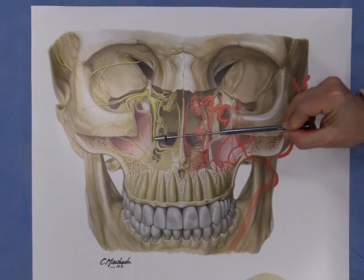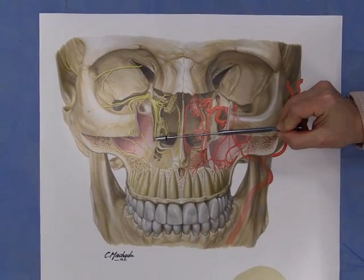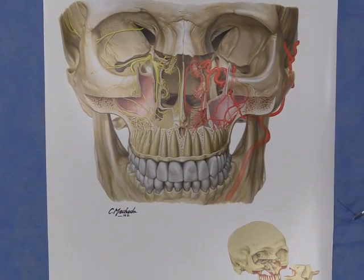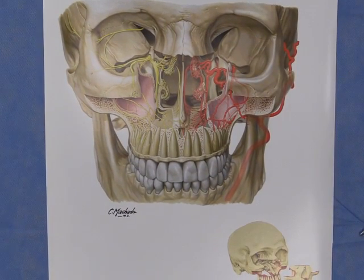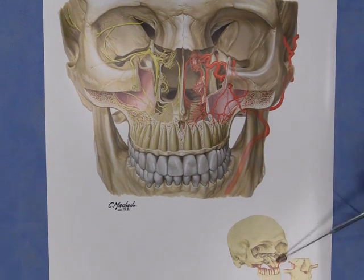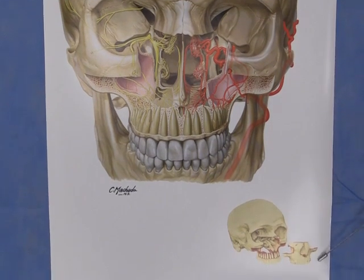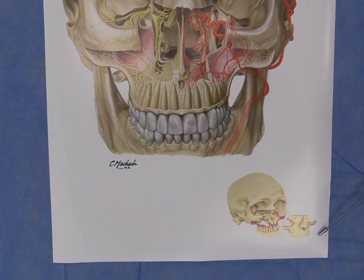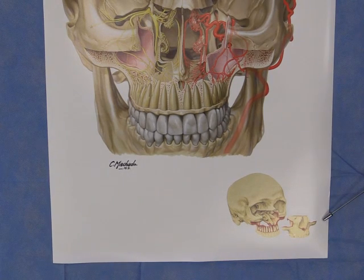What makes this image unique is that it demonstrates the pterygopalatine fossa from an anterior view or perspective, with much of the maxilla removed to show its neurovascular contents.